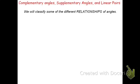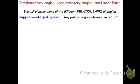Let's start by classifying supplementary angles. The definition of supplementary angles is any pair of angles whose sum is 180. A pair means two — you can't have one supplementary angle and you can't have three supplementary angles. Supplementary angles have to be two angles which add to be 180. For example, angle A at 30 degrees plus angle B at 150 degrees add to be 180 degrees.